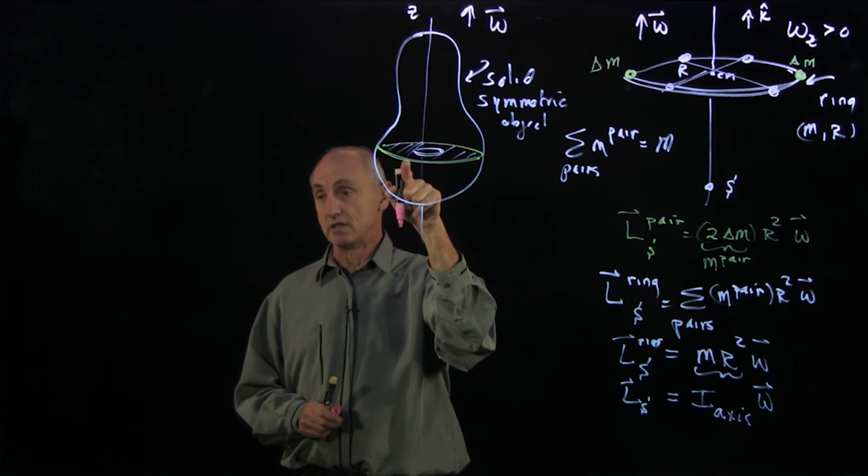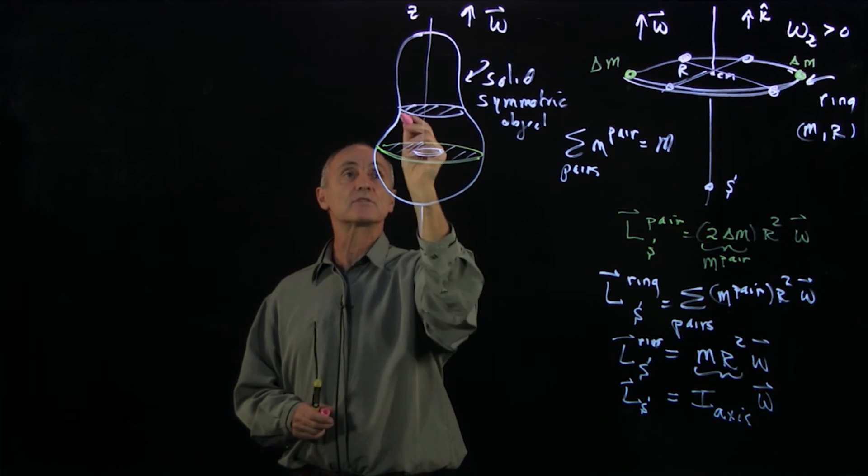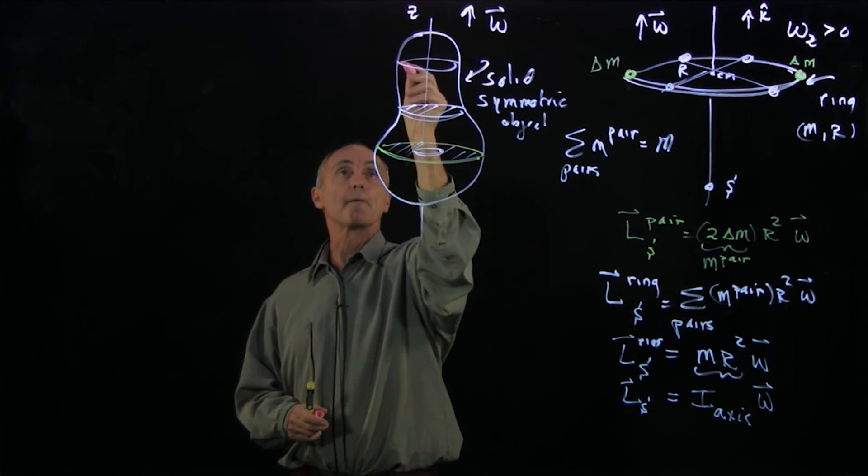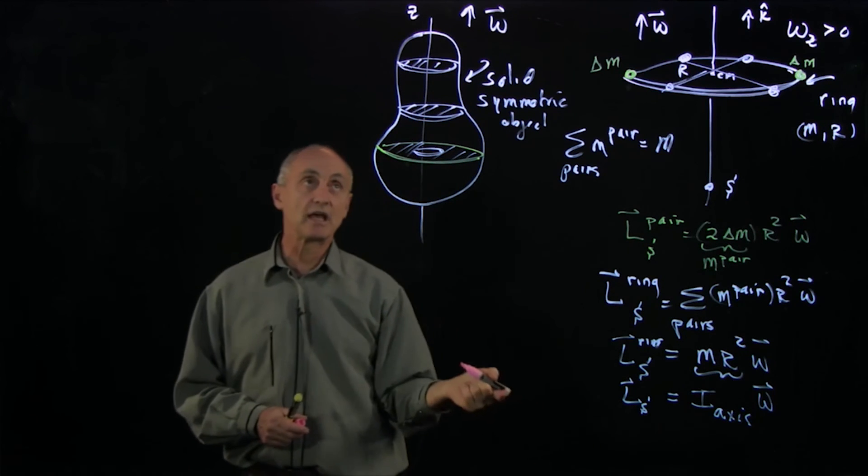And so the angular momentum of just this disk is the moment of the disk about the axis. And now I'll just add more disks that are symmetric.